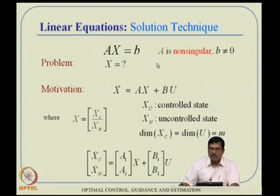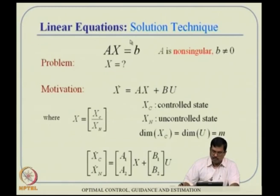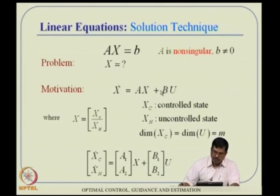A inverse is the adjoint of A divided by determinant of A, which requires a lot of computation. We do not want to resort to that definition every time. Now, why do we require this kind of solution in control theory?